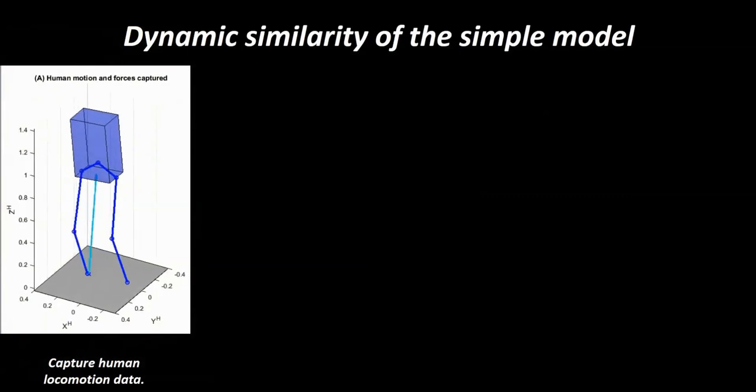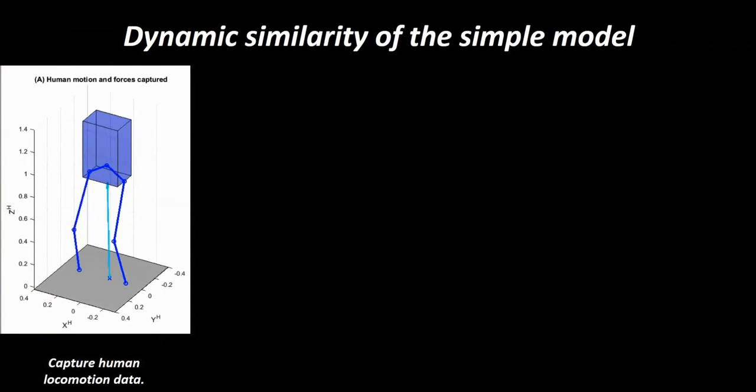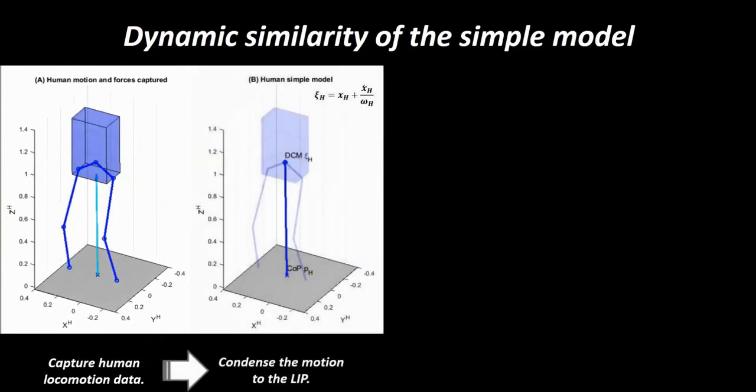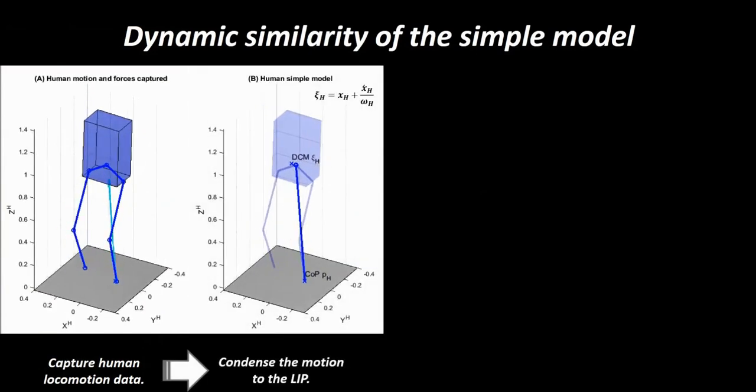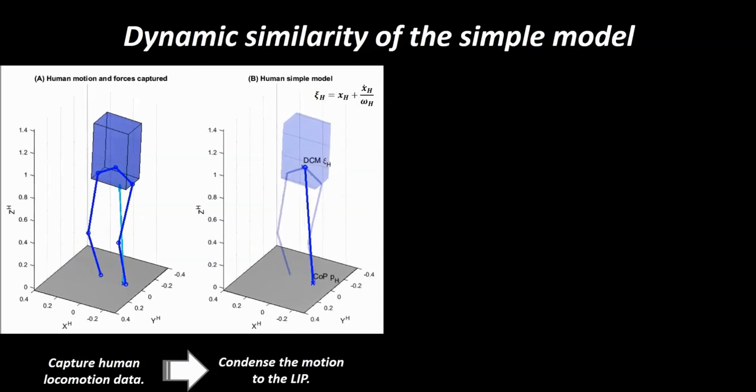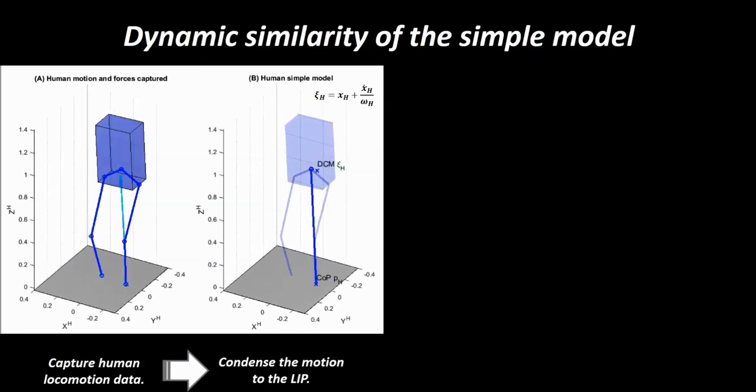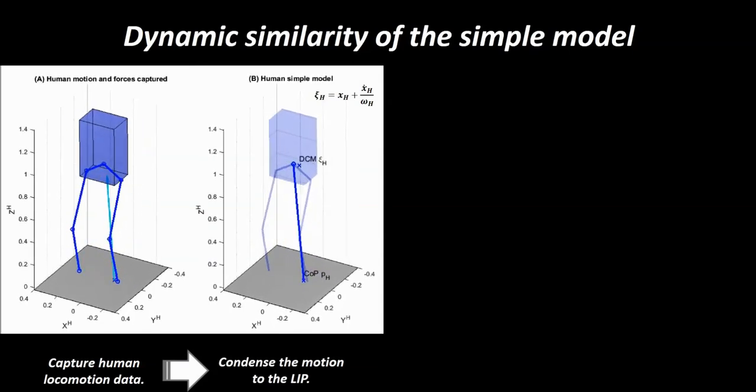To make the robot dynamically move in synchrony with the operator, we first capture human motion trajectory and condense this data using the pendulum model. The motion is fundamentally described by the translation of the center of mass and the center of pressure.